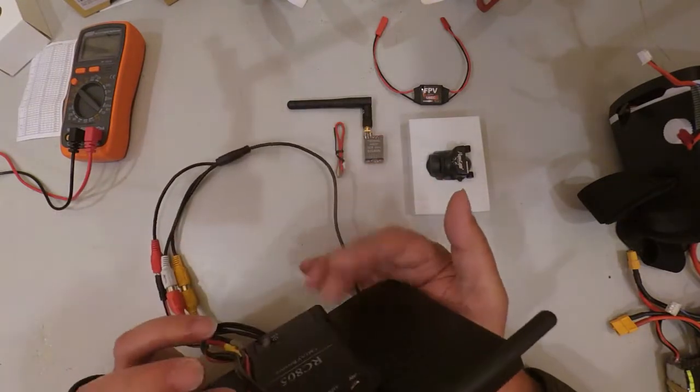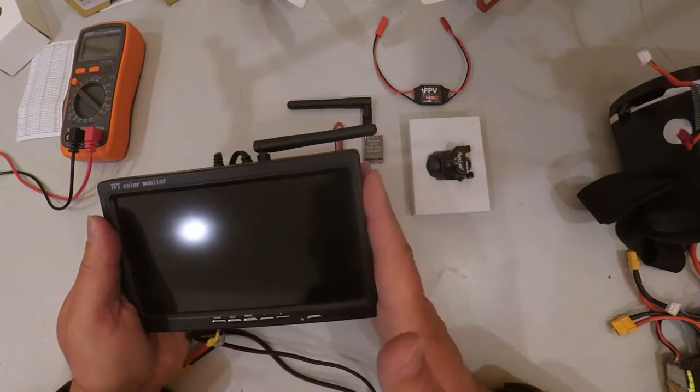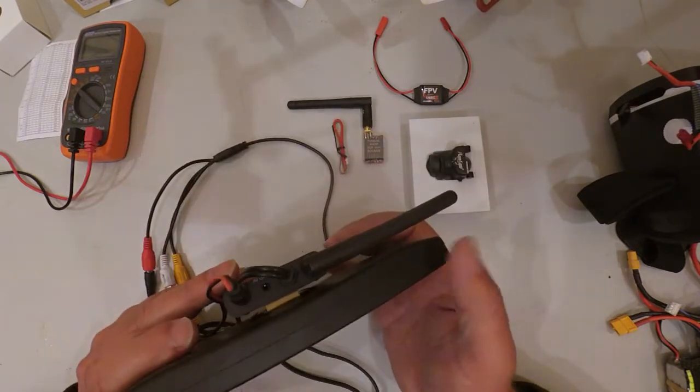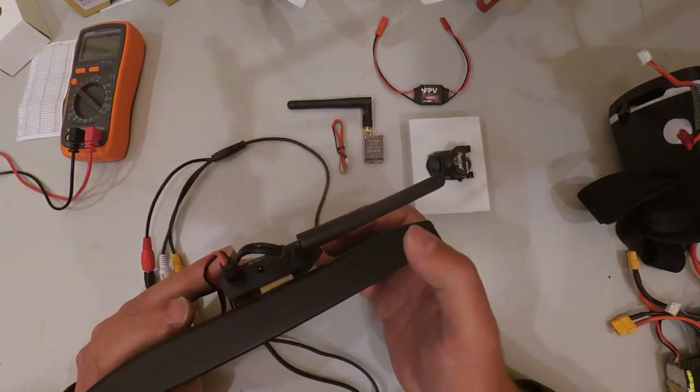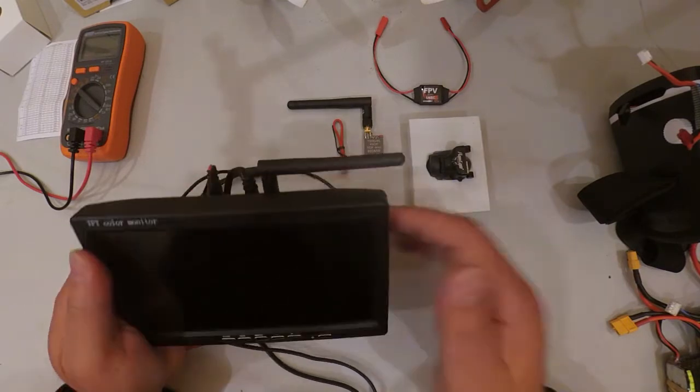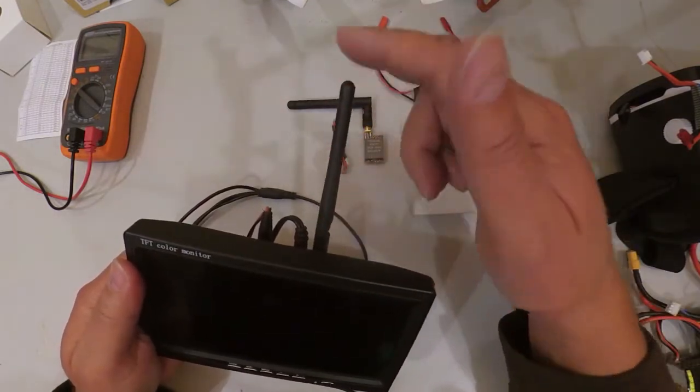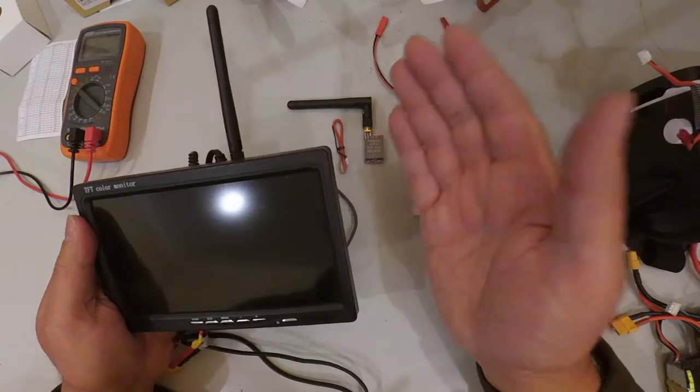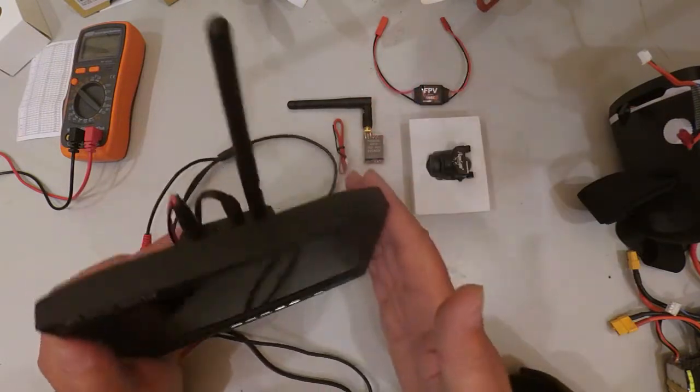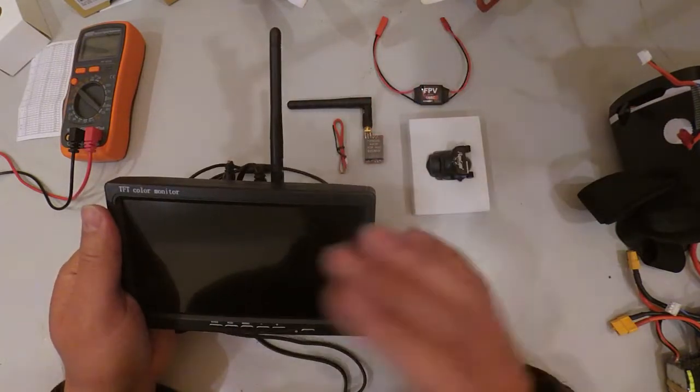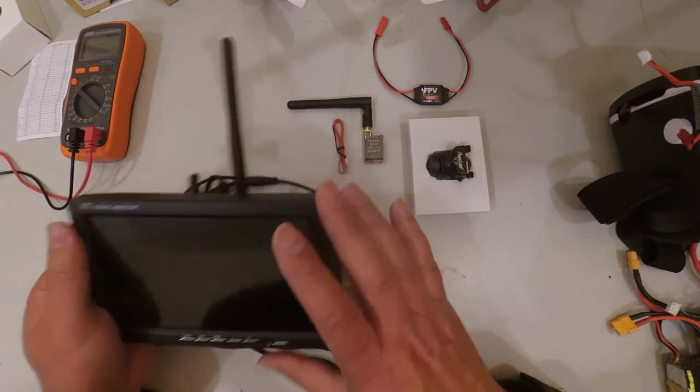You can use a screen with a separate receiver, or you can buy a screen which has an integrated receiver already. You do get those as single or dual diversity receivers, but they do get pretty expensive. This is a very cheap option.